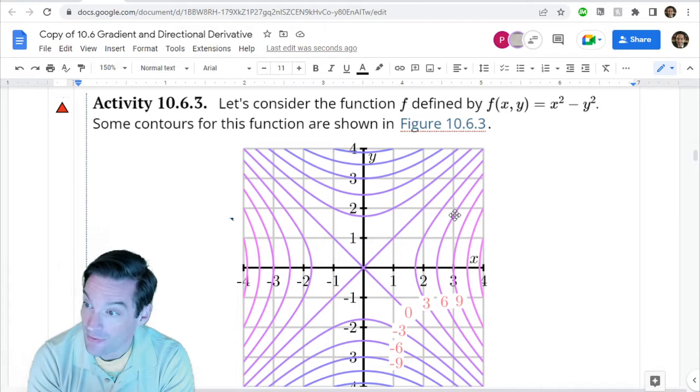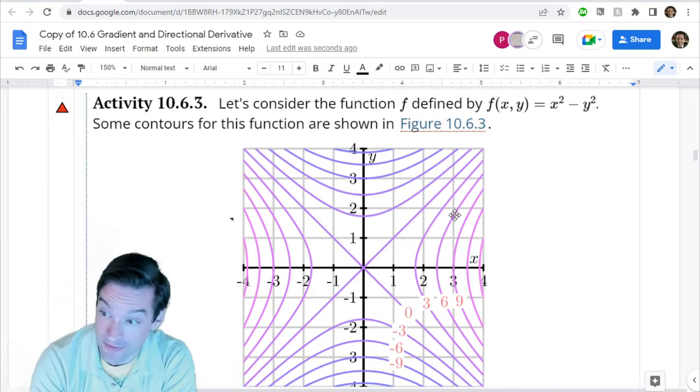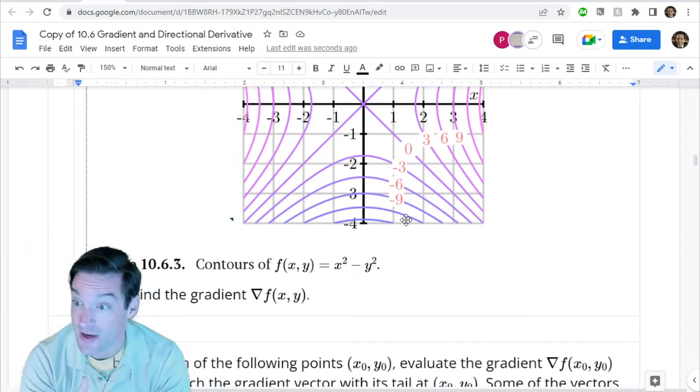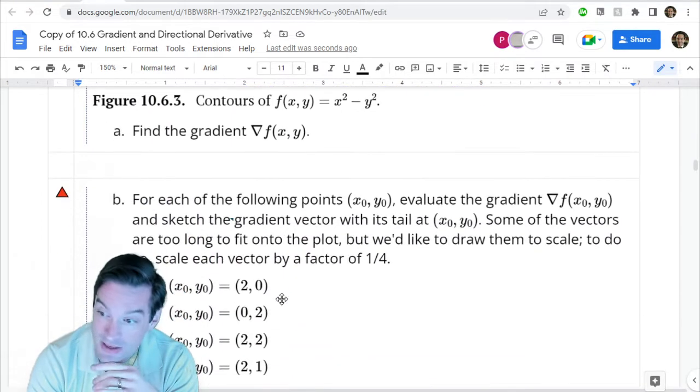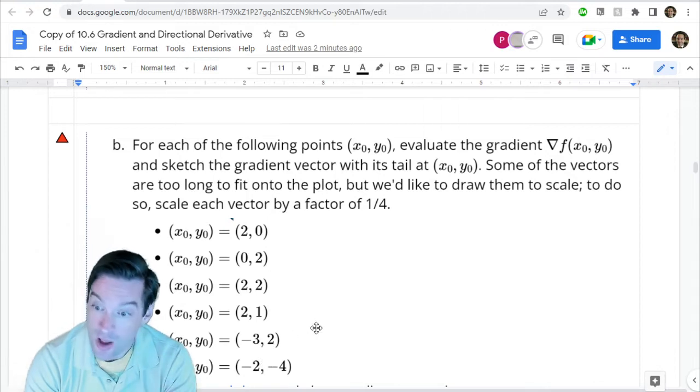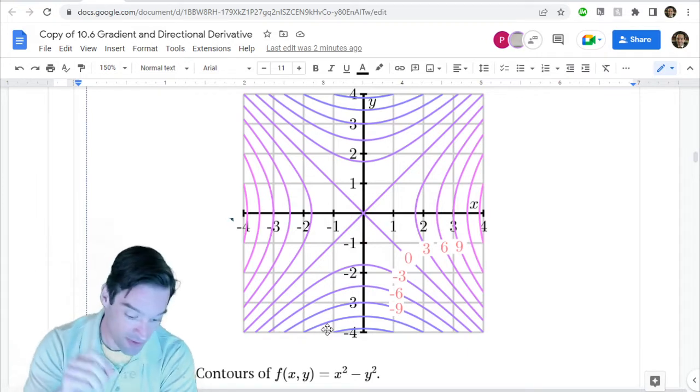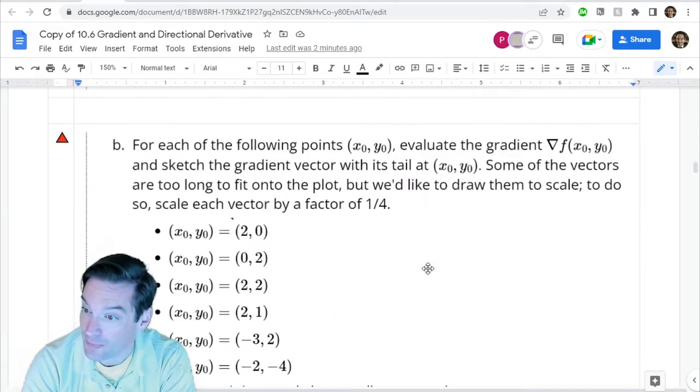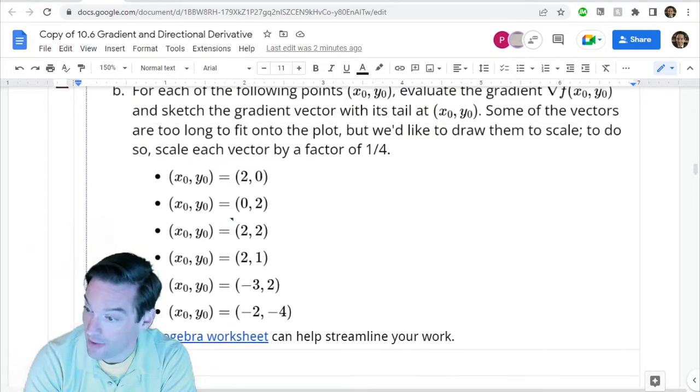So activity 10.6.3 is where we resume our story. And in this activity, we have a multivariable function f of x and y is x squared minus y squared. We have a contour plot for that function. And then your job is, first of all, going to be to just compute the gradient vector, which is going to be a function of x and y because we haven't said that we're evaluating it at any specific point. But then in part b, you're going to evaluate that gradient vector at a variety of different points and then draw those vectors on your graph. Now, because we're working remotely and drawing diagrams, especially on top of things that you don't have printed out in front of you, I've put a GeoGebra worksheet here to help out with that visualization.